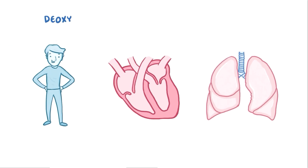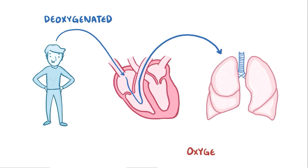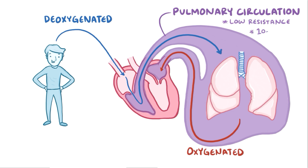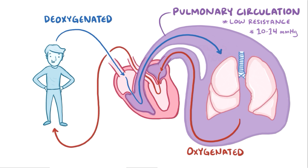Normally, deoxygenated venous blood from the body goes into the right atrium of the heart. From there it goes into the right ventricle and gets pumped into the lungs, where it gets reoxygenated as it goes through the pulmonary circulation. The pulmonary circulation is a low resistance system with pressures ranging between 10 mmHg and 14 mmHg. After going through the lungs, oxygenated blood goes into the left atrium, then into the left ventricle, and finally gets pumped back out to the body.